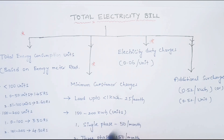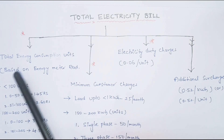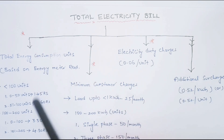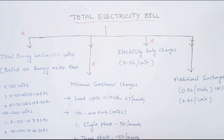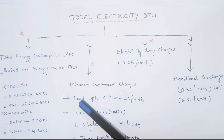In our electricity bill there are mainly four charges. The first one is the consumption charge — what we use in domestic or commercial applications. That power is multiplied by the unit charge, which is decided by the government of Telangana through the SERC (State Electricity Regulation Commission). Based on tariffs from the 2018-19 government order, we multiply units by the applicable charge rate.